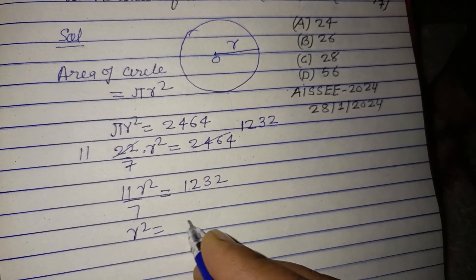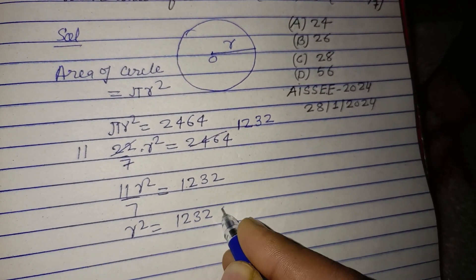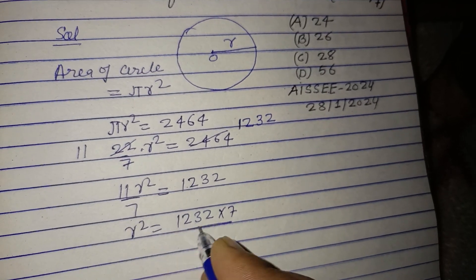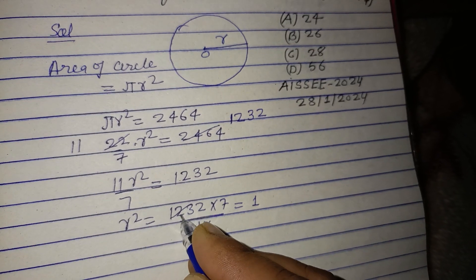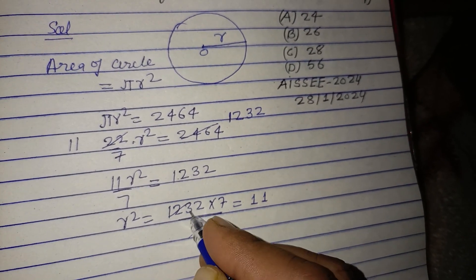Therefore r² equals 1232 times 7 upon 11. 11 into 112 is 1232. So 2 times 11 is 22 into 7 equals r².